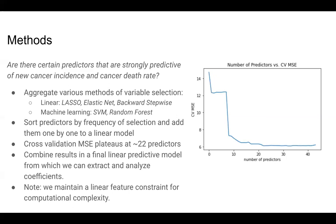From the plot, you can see that cross-validation mean squared error scores plateau at around 22 predictors. So we combined our results and fit a final linear predictive model using the 22 most important predictors as determined by our various methods of feature selection. It is important to note that we maintained a linear feature constraint for computational complexity.